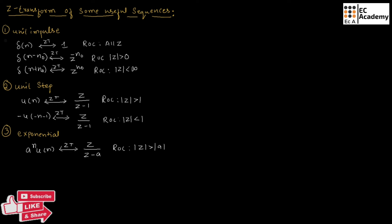And if we have the function minus b to the power of n times U of n, and we perform Z-transform, we will get Z divided by Z minus b. Here the ROC will be magnitude of Z greater than magnitude of b.